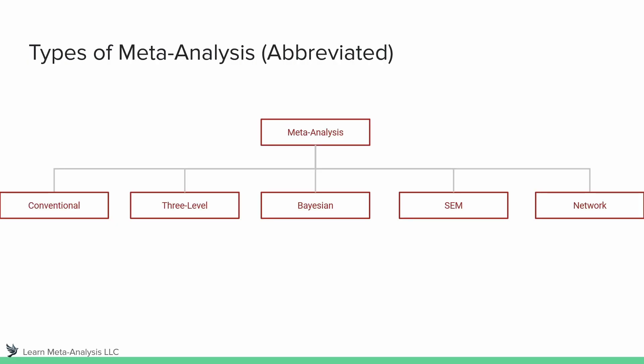What I've created here is an abbreviated taxonomy showing the types of meta-analysis. On the left we have conventional meta-analysis; somewhat related to that is three-level meta-analysis. We also have Bayesian meta-analysis, structural equation modeling meta-analysis, and network meta-analysis. There are other types too and variants of each, but for high-level understanding this is a good overview. In educational fields, what we most often see are conventional and three-level meta-analyses, so that's what we'll focus on. In other fields like medicine, network meta-analysis is a very important technique, but I just haven't seen it used in education yet.